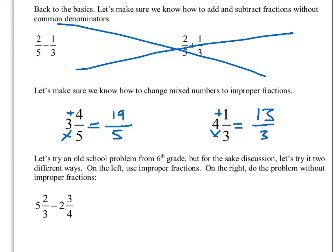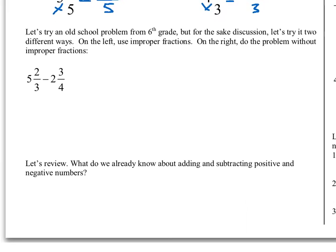That was the only other piece we didn't practice during the do-now, and that's going to make sure we're successful today. I want to go over an old-school problem from 6th grade — I call it that because it has no negatives to deal with. We're going to do it two different ways: on the left-hand side using improper fractions, and on the right-hand side without improper fractions, to see what happens.